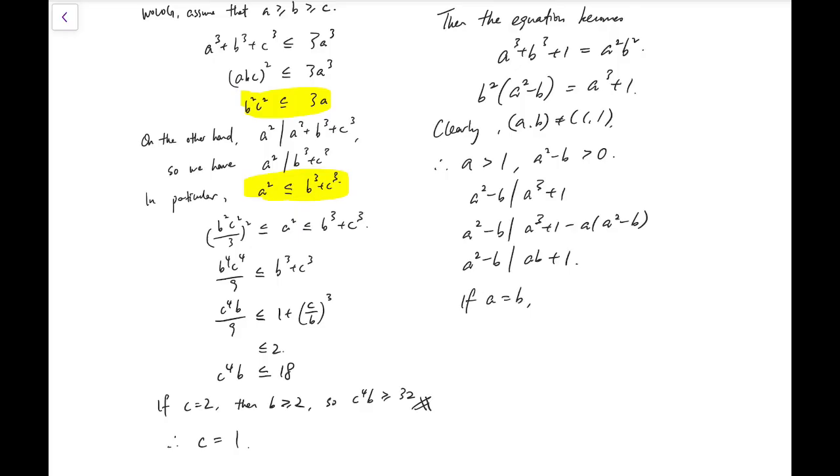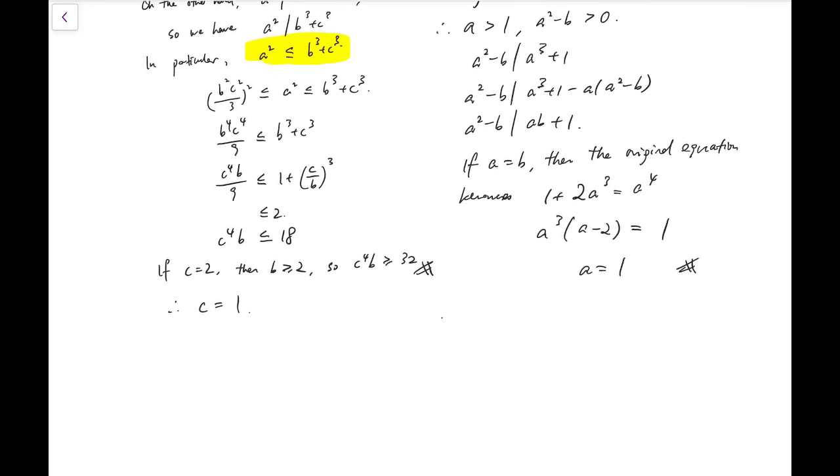And I'm going to see whether a can be equal to b. If a equals to b, then the original equation becomes 1 plus 2a cubed equals a to the 4. And that's clearly not true. Because then we will have this product equals to 1 and a equals to 1, which is what we have got above. If a is 1, then we are forcing b to be 1, because a is the largest variable. So now we know that a is larger than b.